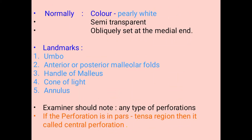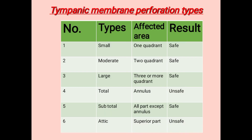In the tympanic membrane, the examiner should note any type of perforation. If the perforation is in the pars tensa region, it is called a central perforation. Central perforation types are: small — one quadrant involved; moderate — two quadrants involved; large — three or more quadrants involved. All are safe types of perforation.